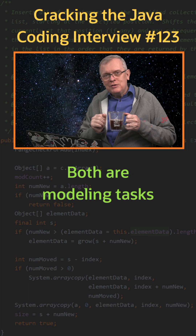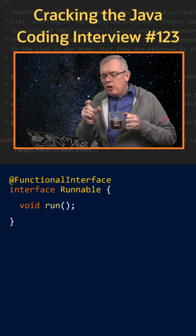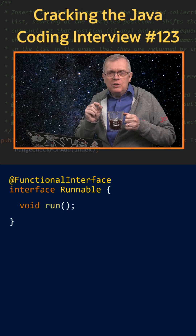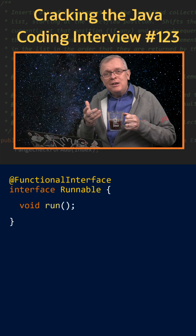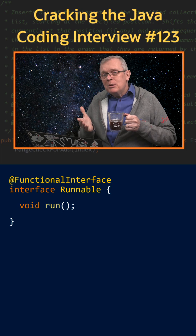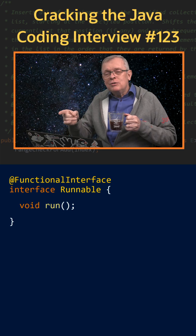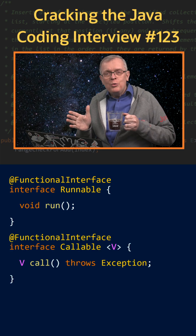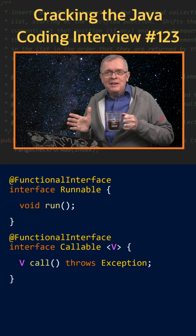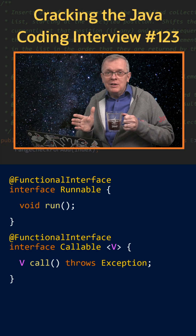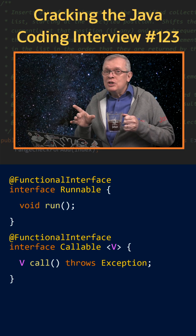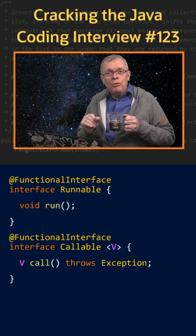Less short answer: a Runnable is a task model introduced in the first versions of Java. It doesn't take any argument and does not return anything. Callable was added in Java 5 in 2004 as part of the Java Util Concurrent API.